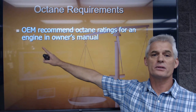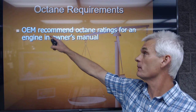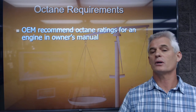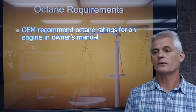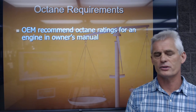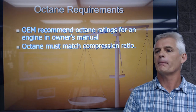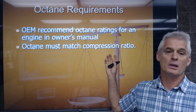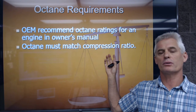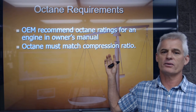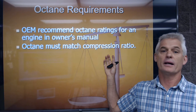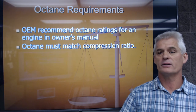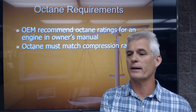The OEM — which is the original equipment manufacturer — is going to recommend the octane rating for an engine in the owner's manual. Octane must match compression ratio. So if you have an 8.5 to 1 or 9 to 1 engine, you're most likely going to be recommended 87 octane. If you have a 9.5 or 10 to 1, you're going to have to run 89 or maybe even 91, but your owner's manual will recommend that.